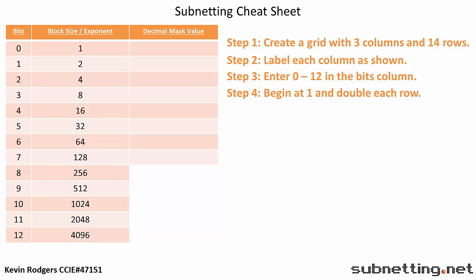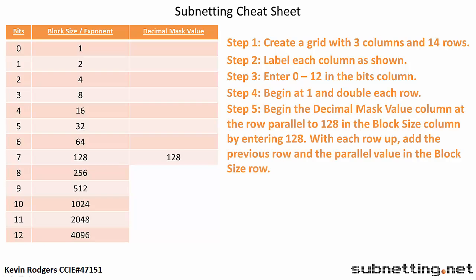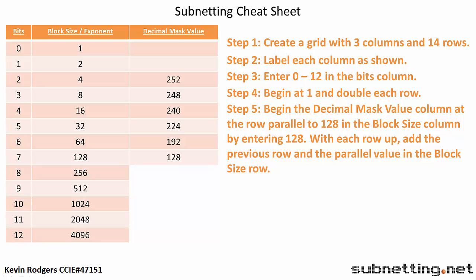Finally, for the Decimal Mask column, start at the row parallel to 128 in the Block Size column and enter the number 128. From there, take the value in the previous row and add it to the next value in the Block Size Exponent row. So 64 added to 128 equals 192, then 32 and 192 is 224, 224 and 16 is 240, 240 and 8 is 248, 248 and 4 is 252, 252 and 2 is 254, and finally 254 and 1 is 255.